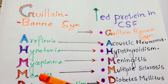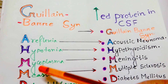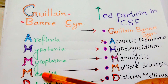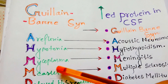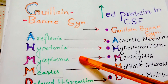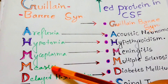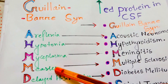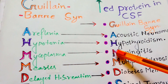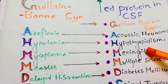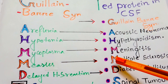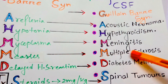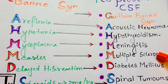Guillain-Barré syndrome commonly follows an infection, such as respiratory tract infection. Mycoplasma pneumoniae and measles are responsible factors. From 'M', it is meningitis, and for the other 'M', it is multiple sclerosis — both causes of increased protein in the CSF.